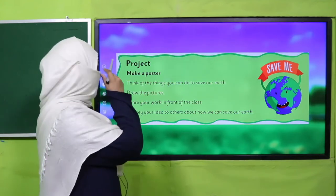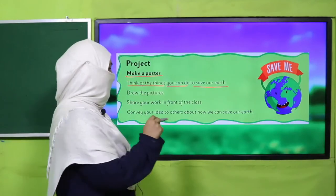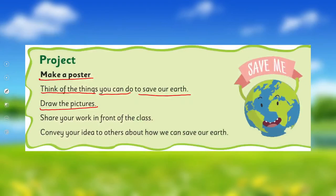The earth is saying 'save me,' so we are going to learn how we can save the earth through a project. What we are going to do: you will make a poster. Think of things you can do to save our earth. We have discussed many things while reading this unit and in the introduction lesson. Do you remember the things? Recall what we can do, draw pictures of whatever we can do to save our earth, and then share your work with your class and convey your ideas to others.